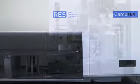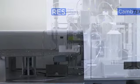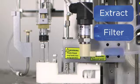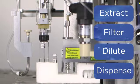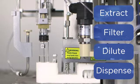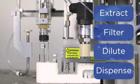Using turbulent fluidic flow, the RES will quickly extract, filter, dilute, and dispense the sample into a sealed 20 mL primary sample vial, or HPLC vial, ahead of testing.